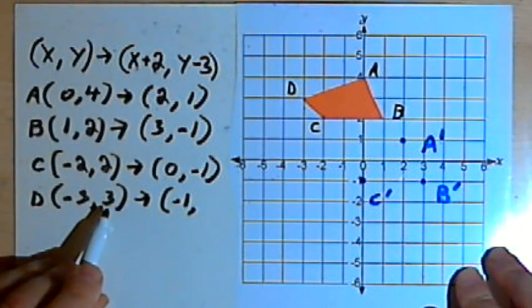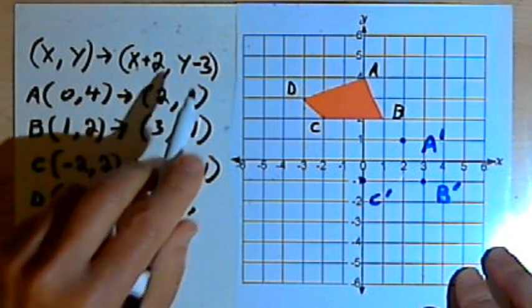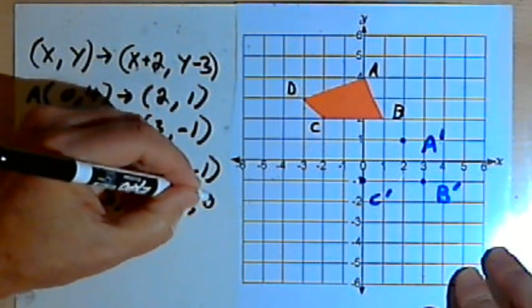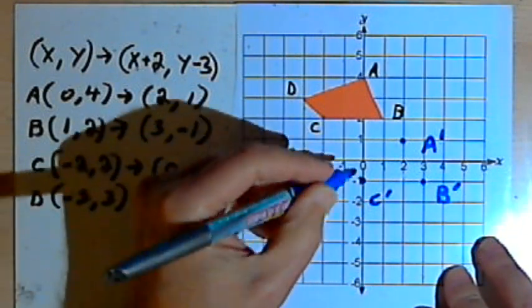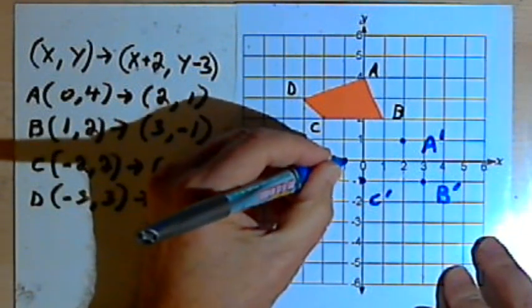I want to take the y-coordinate, 3, and subtract 3 from it. That'll get me to 0. And that's going to be point D prime. So that's at (-1, 0), which is here.